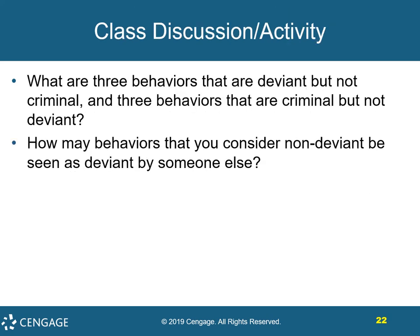Here is a discussion question for you to consider: What are three behaviors that are deviant but not criminal, and three behaviors that are criminal but not deviant? Also ask yourself: how may behaviors that you consider non-deviant be seen as deviant by someone else?